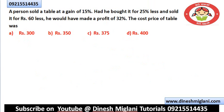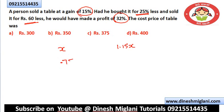Question 3: A person sold a table at a gain of 15%. Had he bought it for 25% less and sold it for Rs. 60 less, he would have made an overall profit of 32%. Let us say cost price is X. He sells it at a 15% profit, so selling price = 1.15X. Had he bought it for 25% less, the new cost price is 0.75X. He sells it for Rs. 60 less, so the new selling price is 1.15X − 60.